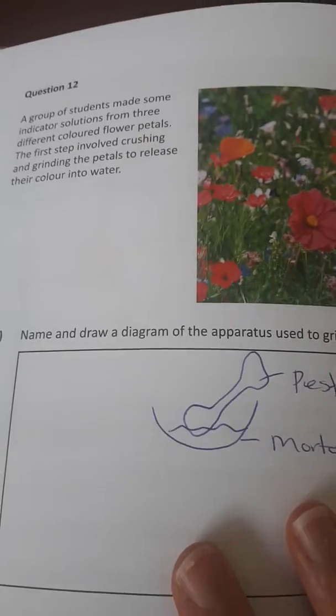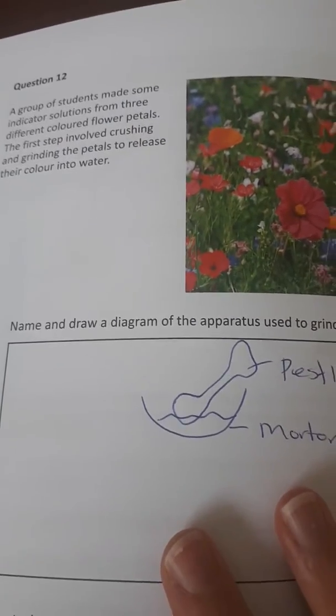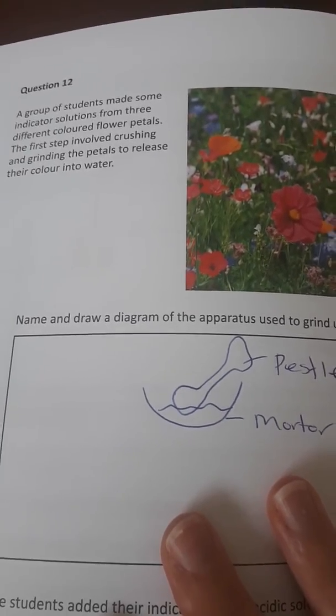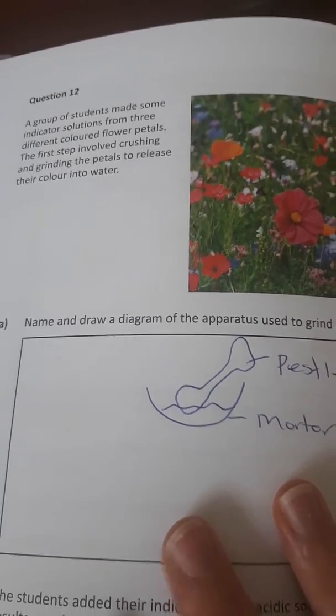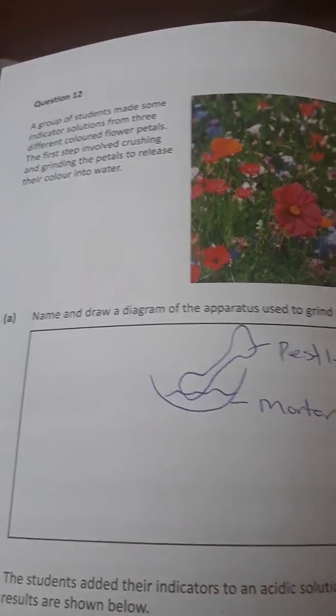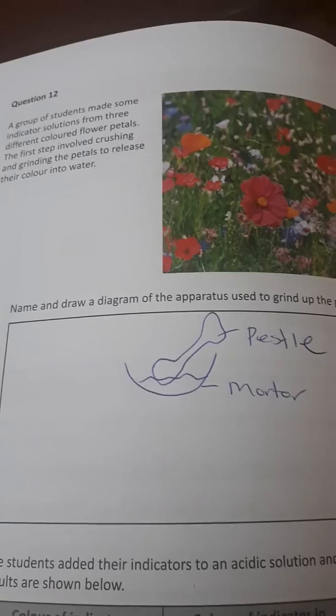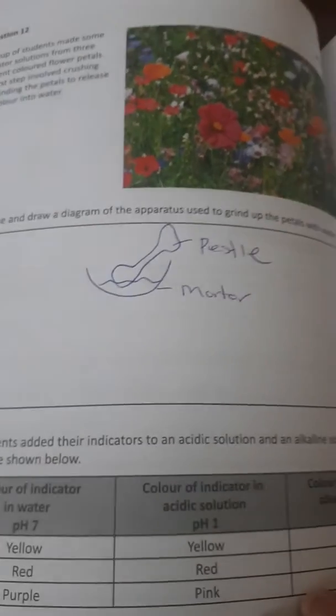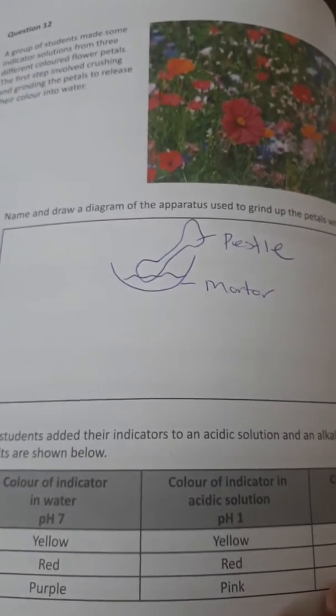Next is question 12. A group of students made some indicator solutions from three different colored petals. The first step involved crushing and grinding the petals to release their color into water. Name and draw a diagram of the apparatus used to grind up petals with water.